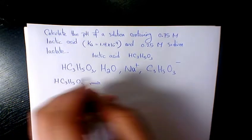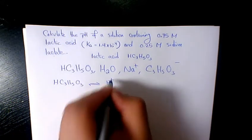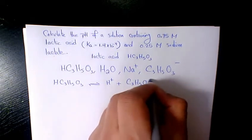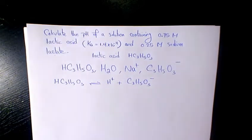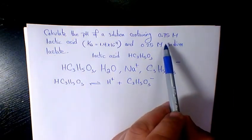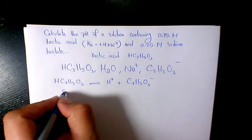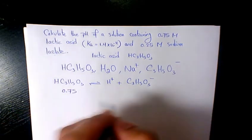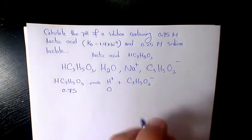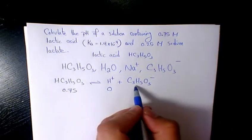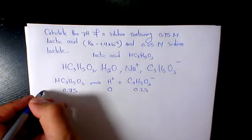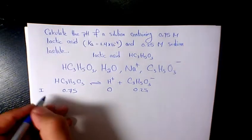I'm going to write lactic acid. When it reacts in water, it's going to produce proton plus lactate ion. What is going to be the concentration? Here we have 0.75 before equilibrium. The proton concentration is approximately 0 — 10 to the power of negative 7, which compared to this one is going to be 0. And the lactate ion is 0.25. That's I, meaning initial.